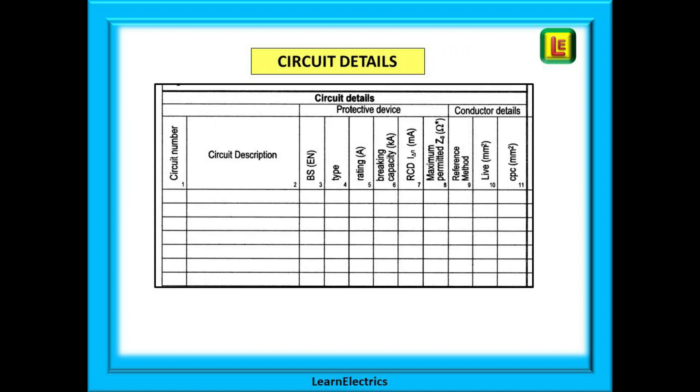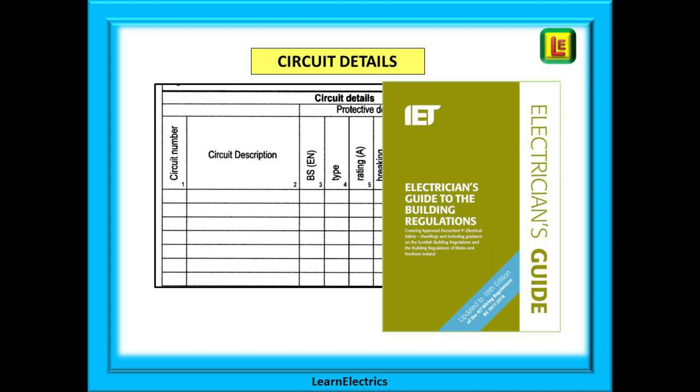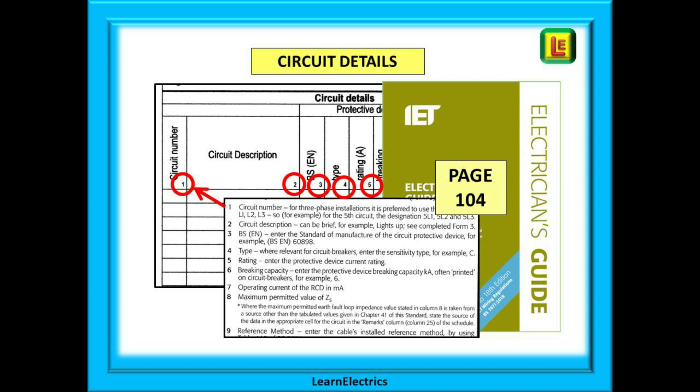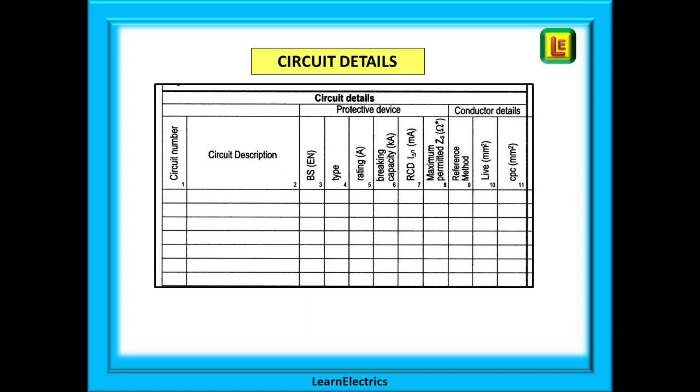And now to the two big boxes. The circuit details section can be completed by visual inspection and knowledge of what is in the consumer unit without the need for any testing. Personally, I always complete all of this section before moving on to the testing section. This is where the electricians guide to the building regulations comes in very useful. If you have a copy of the electricians guide, turn to page 104. There you will find a list. Look at the schedule of test results and each column in this section has a small number at the top. The information in the list on page 104 relates directly to each of these column numbers and I have circled them in red on this slide. So, let us complete this circuit details section as I would complete it.